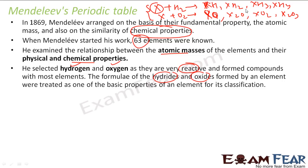He took 63 cards — one for each element. On each card, he wrote the element name, for example X, the hydride it formed (e.g., XH), the oxide it formed (e.g., XO2), and the atomic mass (e.g., 58). He created 63 cards like this with all 63 element names, all the hydrides and oxides, and all the atomic masses.